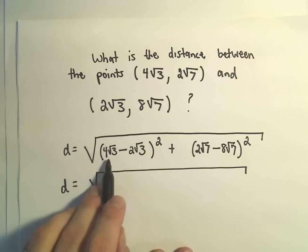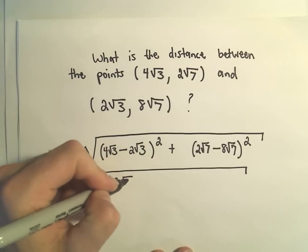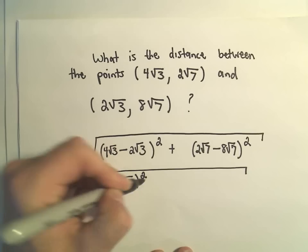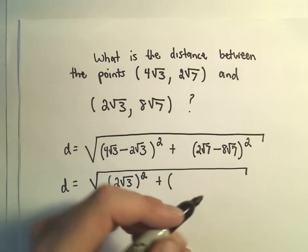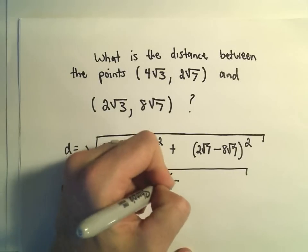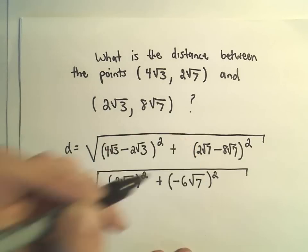So 4 root 3 minus 2 root 3 would give me 2 times the square root of 3, that's all being squared, plus, 2 root 7 minus 8 root 7, and that would give me negative 6 times the square root of 7, squared.